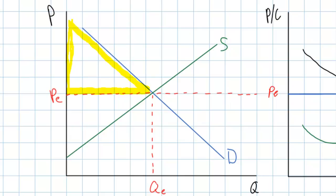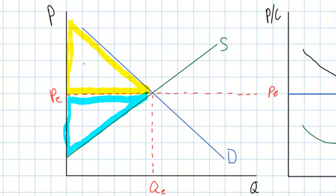Producer surplus refers to the total welfare of producers who were able to sell their product at a price greater than their cost of production — producers who would have been willing to sell at a lower price but instead sell at the higher equilibrium price PE. Graphically, producer surplus is shown by the area below the equilibrium price and above the supply curve, outlined in blue. In our graph on the left showing a perfectly competitive market in long-run equilibrium, consumer and producer surplus are maximized.